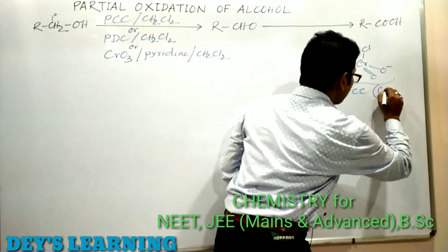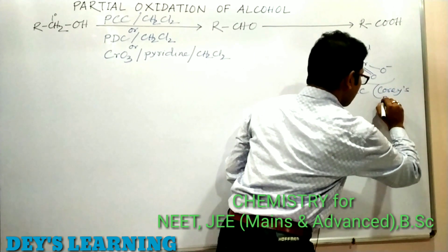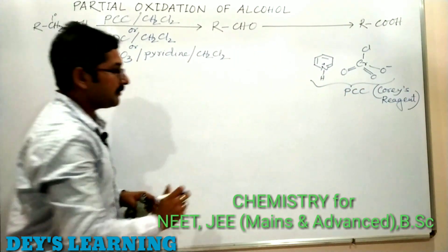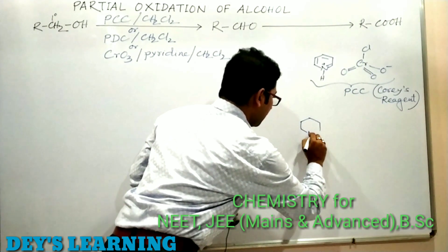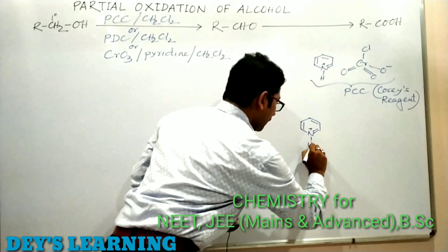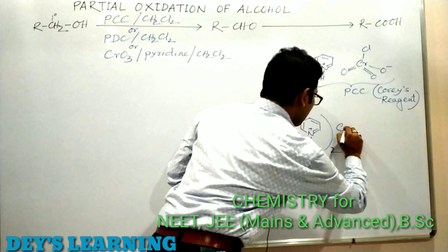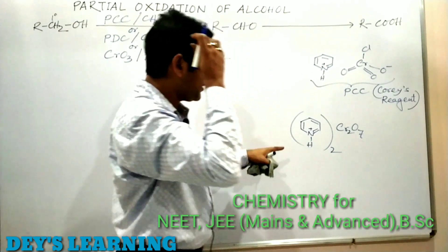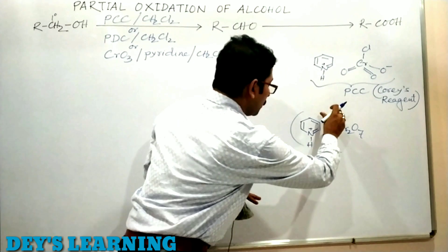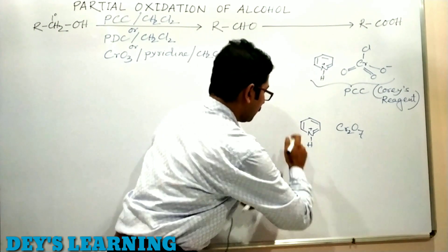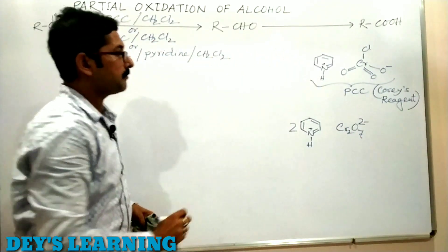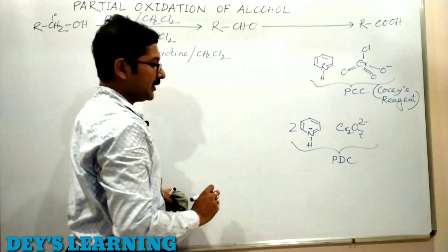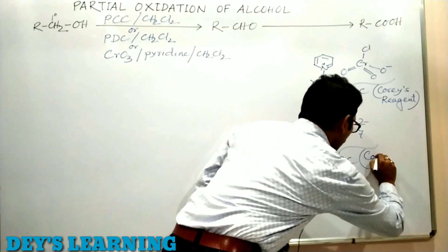The next one is PDC — pyridinium dichromate. This consists of a pyridinium ion and dichromate: two pyridinium ions and Cr2O7 2−. These two ions are present, so this is known as PDC, pyridinium dichromate. Sometimes this is also known as Cornforth reagent.